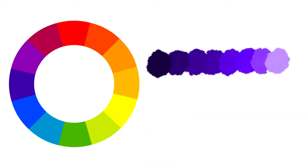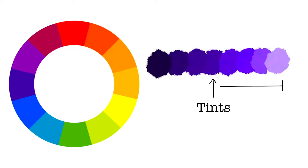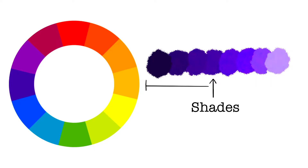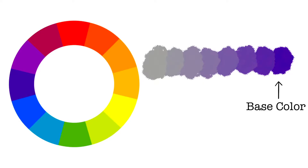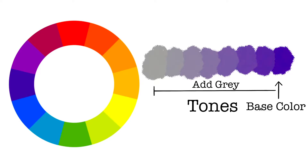So what are tints, shades, and tones? Tints are when you take your base color and add white to it. Shades are when you take your base color and add black to it. Tones are when you take your base color and add a neutral gray to it.